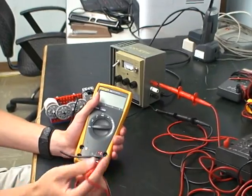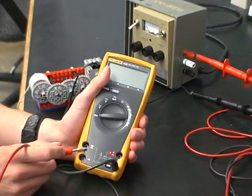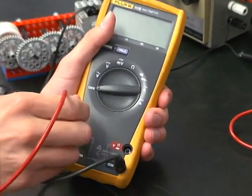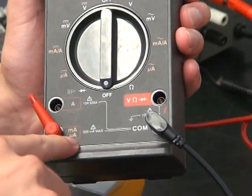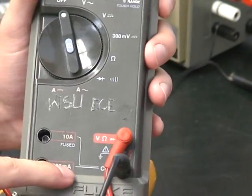With the multimeter, you want to take the red one and plug it into the 300 milliamps one. You can see on this one right here, the milliamps, and this one right here, the 300 milliamps.